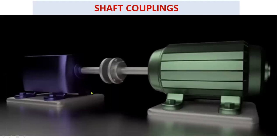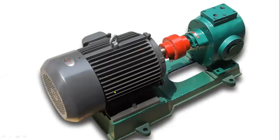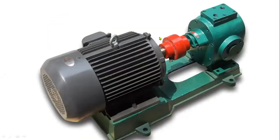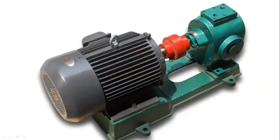Here you can observe a coupling — this coupling is used to join two shafts. For example, this shaft is for a generator and this shaft is for a motor. The red color machine element shown here is called a coupling.